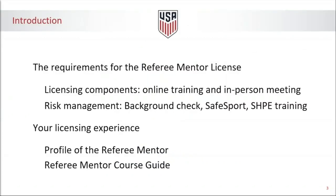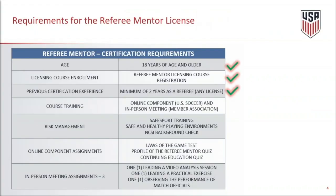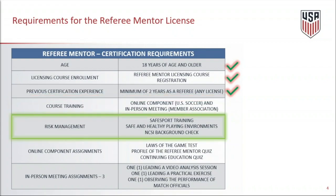To earn the referee mentor license you must complete an online training in the U.S. Soccer Learning Center and an in-person meeting with a member association state referee committee, or SRC. The candidate must also complete the risk management training in the learning center. You've likely met the first three requirements in this chart. Currently you're working on the online component and have likely selected an upcoming in-person meeting hosted by one of the member association SRCs. Regarding risk management, you've likely already passed the NCSI background check. We recommend completing the Safe Sport and Safe and Healthy Playing Environments online training seven days prior to the in-person meeting.